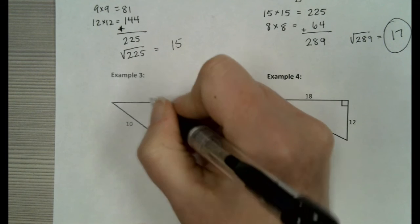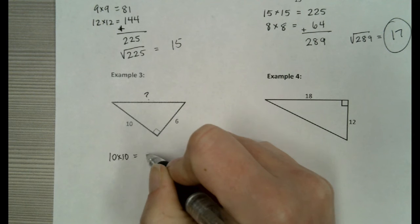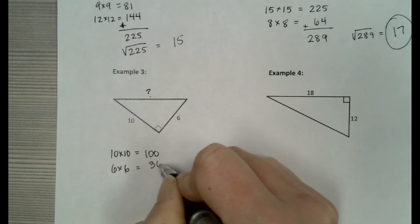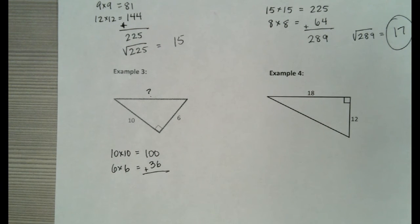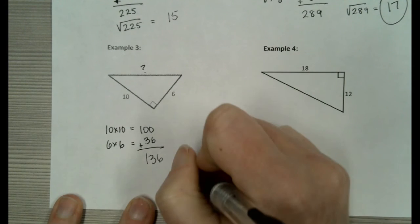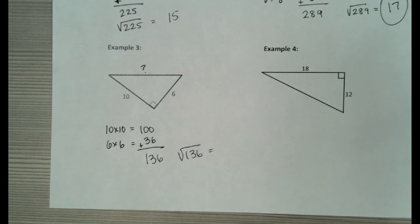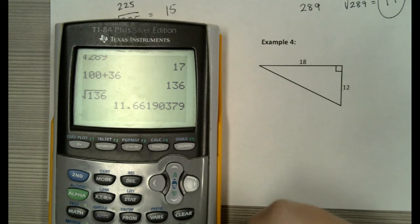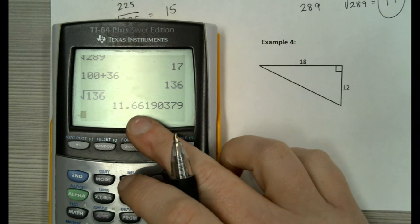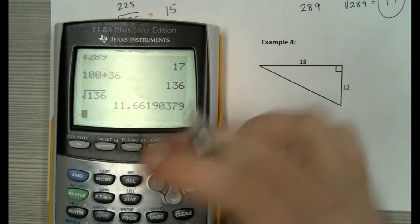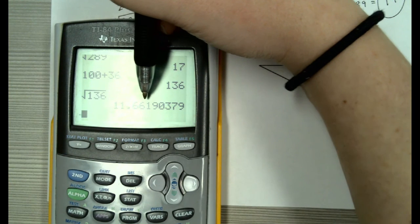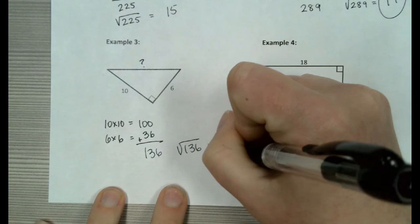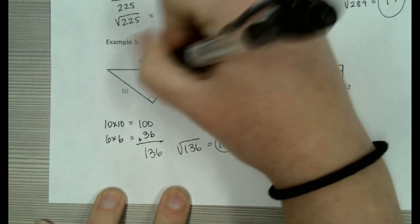Example 3 — doing it again. This is the side we're looking for. We're going to do 10 times 10, which is 100, and 6 times 6, which is 36. Add them together and I get 136. Last step — square root of 136. This time we get a decimal number, and remember not every number is a perfect square. So a lot of times you're going to get a decimal. Let's round to two decimal places — this is approximately 11.66. So this side is approximately 11.66.